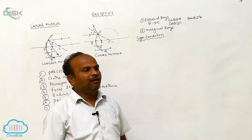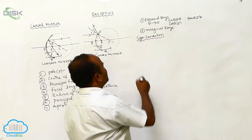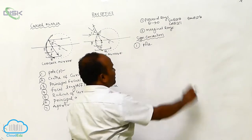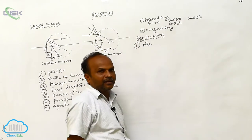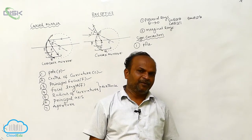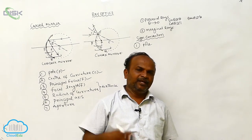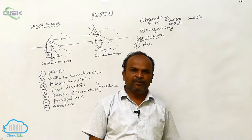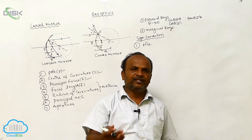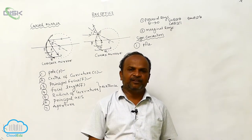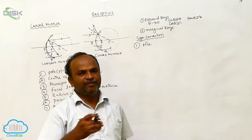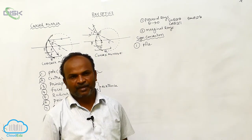First sign convention: all the distances must be measured from the pole. Object distance measured from the pole, image distance measured from the pole, focal length always measured from the pole, radius of curvature always measured from the pole. Whatever the distance, it is measured from the pole.